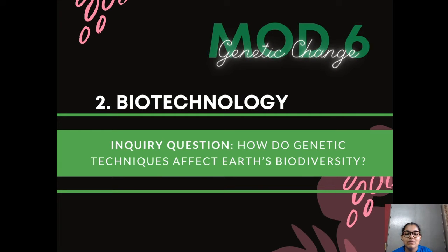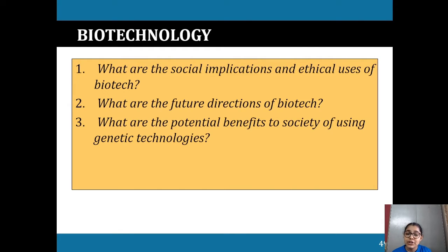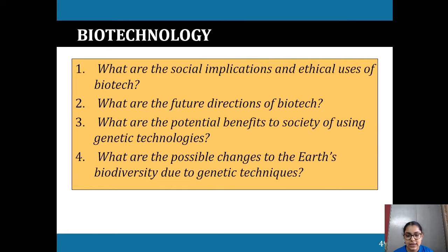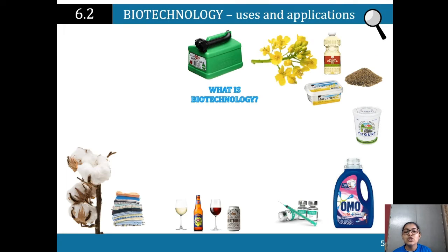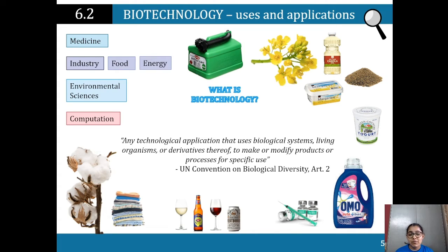Biotechnology: how do genetic techniques affect Earth's biodiversity, what are the social implications and ethical issues, what are the future directions, and what are the potential benefits to society? Biotechnology is a branch of science used in medicine, industry, food, energy, environmental sciences, and computation. According to the UN Convention on Biological Diversity, biotechnology is any technological application that uses biological systems, living organisms, or derivatives thereof to make or modify products or processes for specific uses.